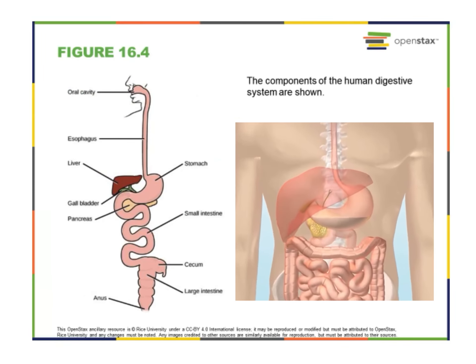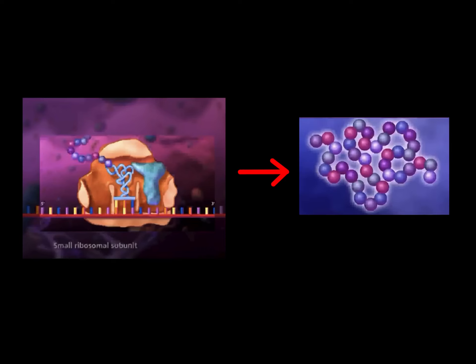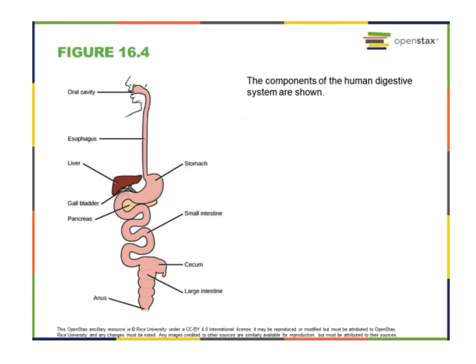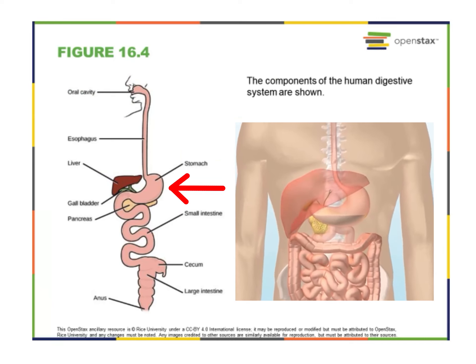A lot of the digestion of protein occurs in the stomach. Many of you have asked — when we look at the flow from gene to protein, we look at how polypeptide chains are constructed, and one question was: where did those amino acids come from? We're building a polypeptide chain — where do those subcomponents come from? How does a tRNA get those amino acids? Well, that has to be broken down from proteins that you eat, and that process largely begins in the stomach.